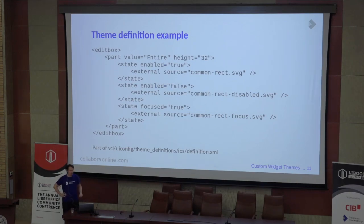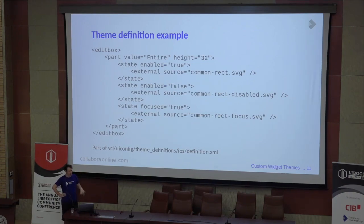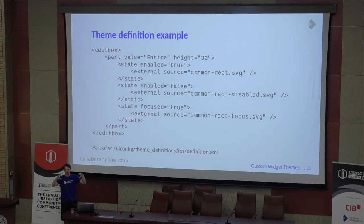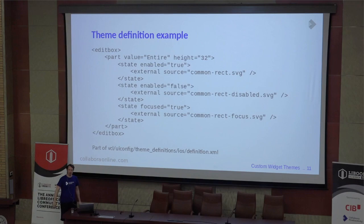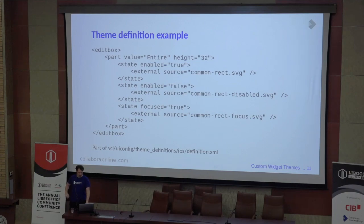This is an example — just a part of the whole definition for the edit box itself. As you can see, draw edit box, and we have the edit box part. There are some widgets that have multiple parts, but for the edit box the value is the entire control. You define the height, and then you have different states — like for the edit box you can have if it's enabled, if it's disabled, or if it's focused — and then you can use different SVG files to draw it.